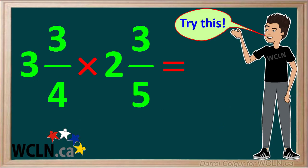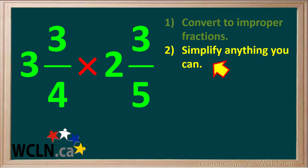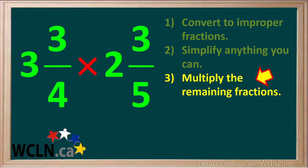Here's one for you to try. You can use the same steps as we used in the example we just showed. Start by converting both mixed numbers to improper fractions. Then simplify anything you can in these fractions. Next, multiply the remaining fractions.